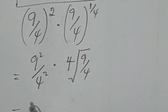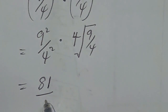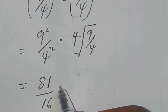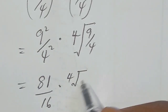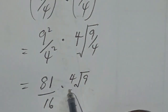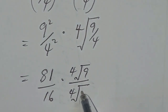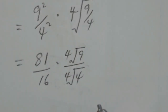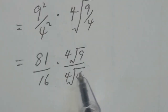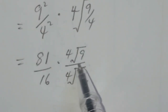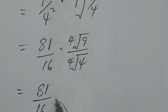9 to the power of 2 is equal to 81, and 4 to the power of 2 is 16. So we have 81 over 16. The fourth root of 9 over 4 can be split as the fourth root of 9 over the fourth root of 4. We can rewrite this expression as 81 over 16 multiplied by the fourth root of 9 over the fourth root of 4.